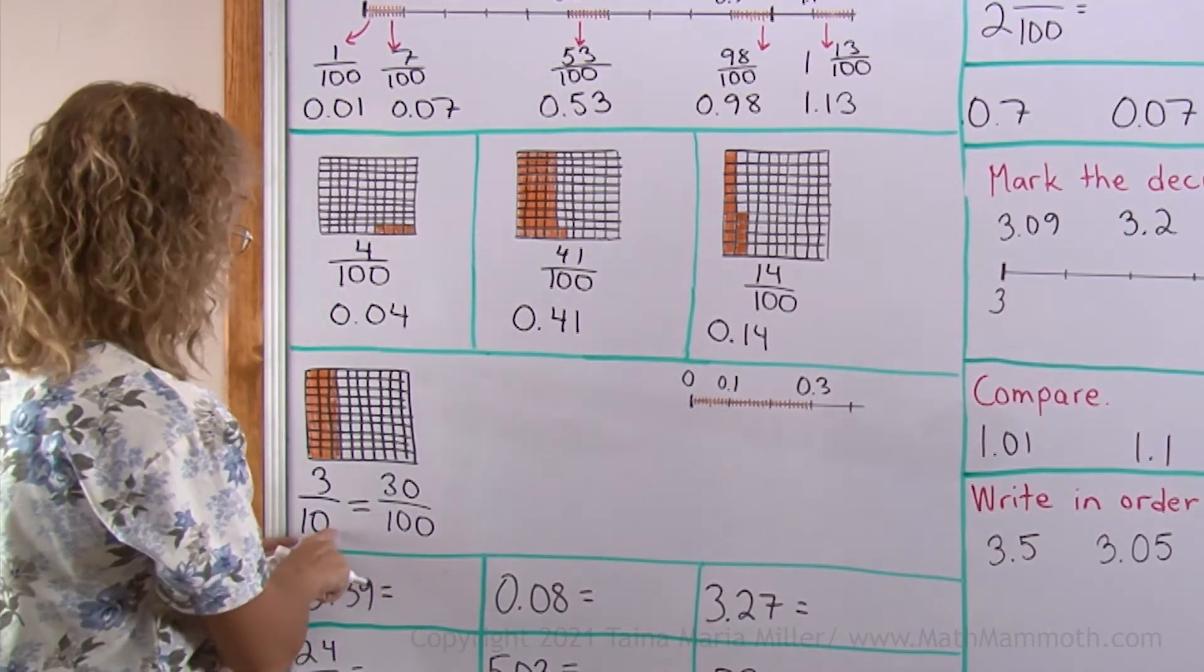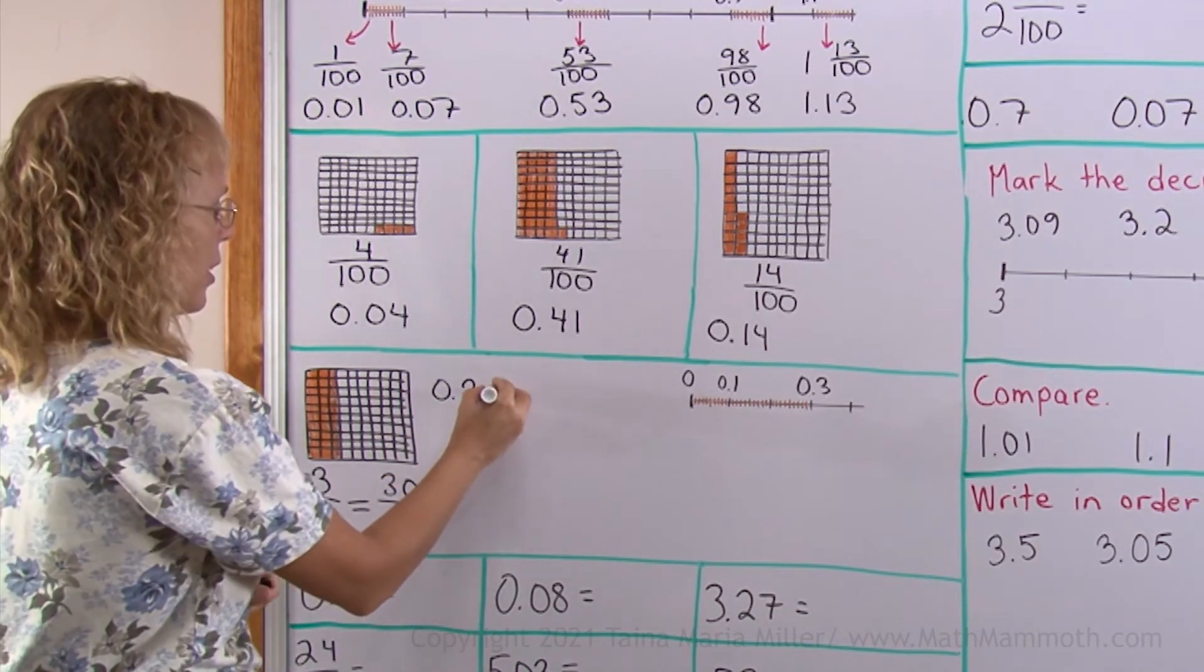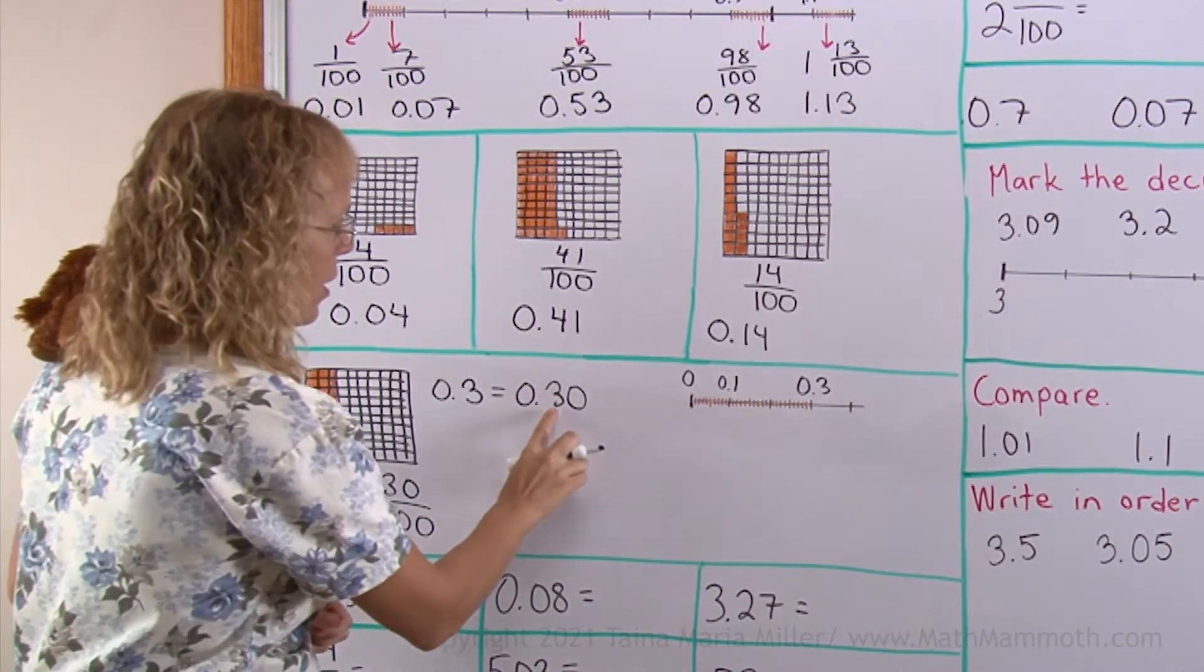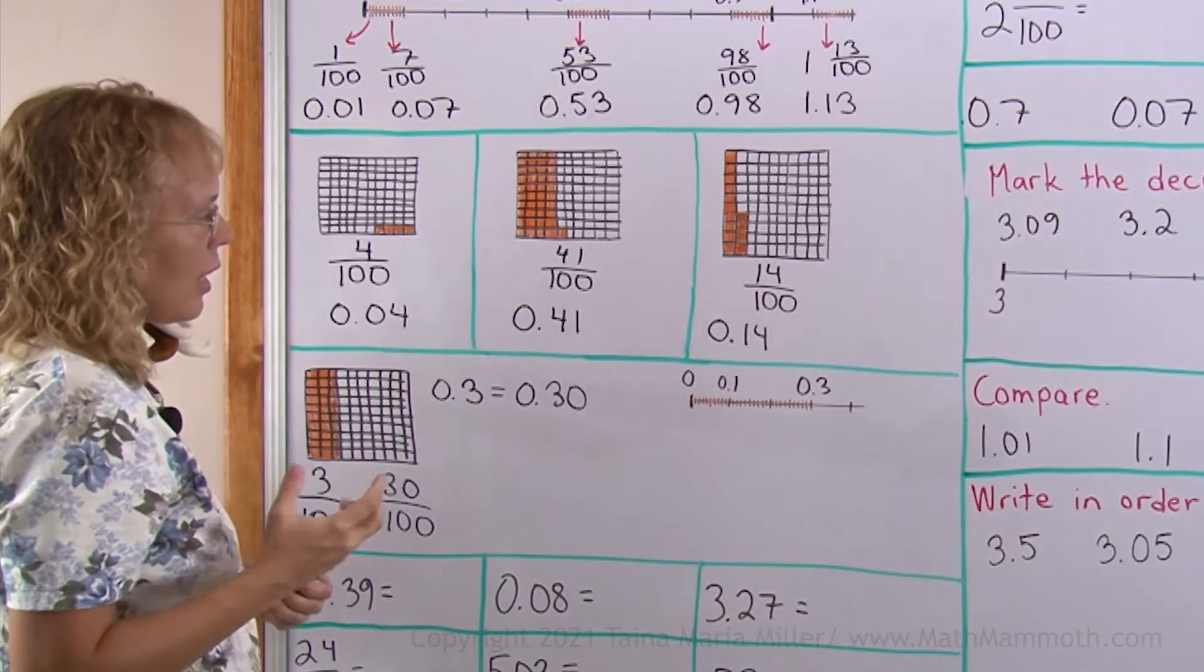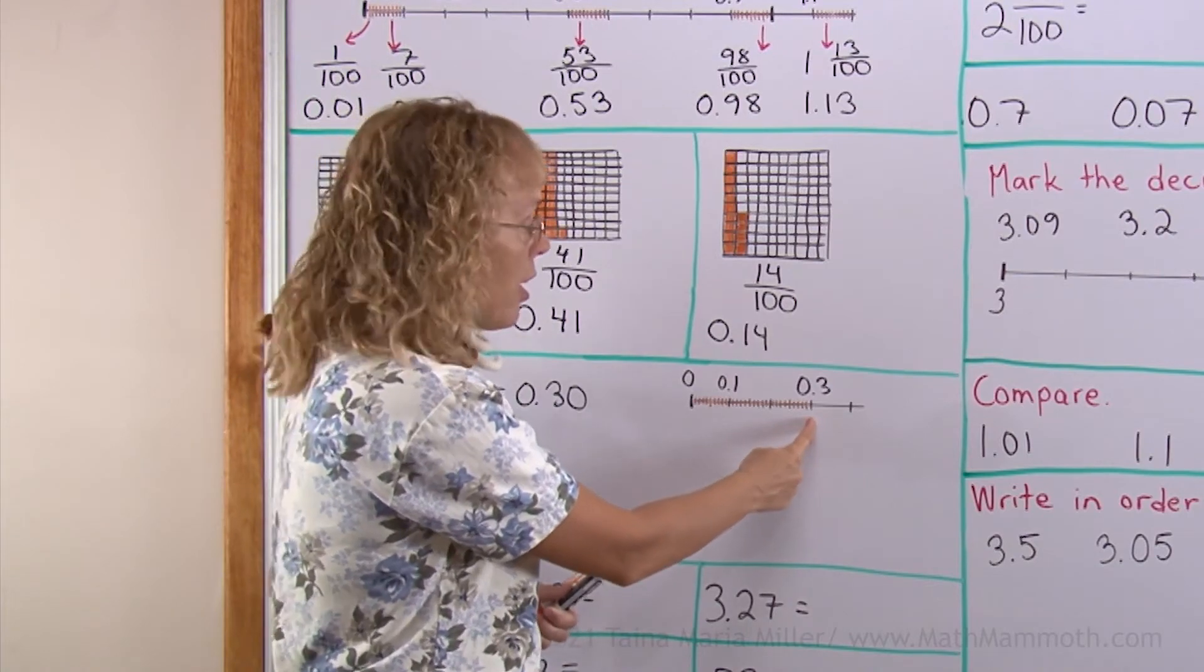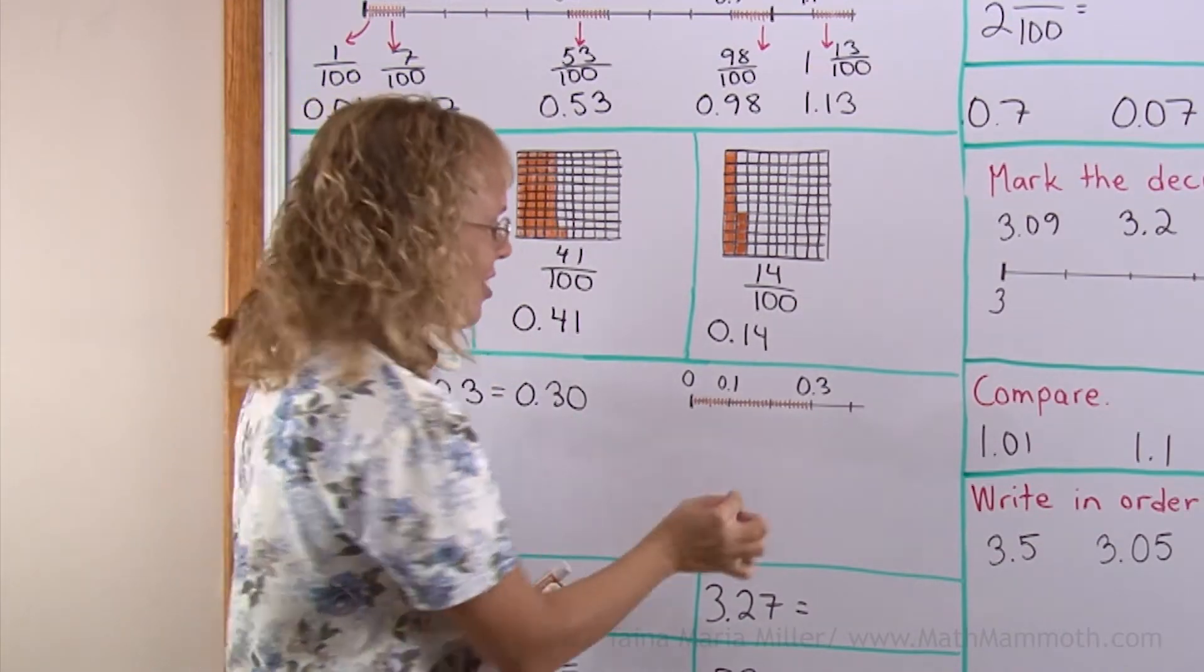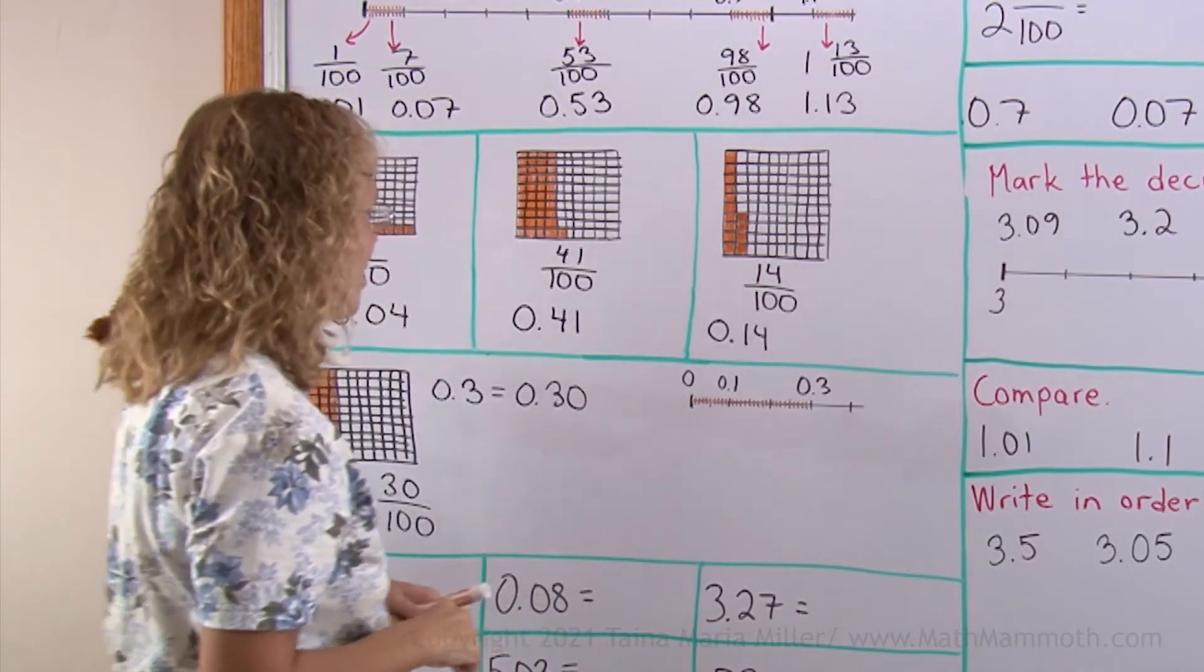As a decimal, I will write this as 0.3. 3 tenths. But it is also 30 hundredths, which I write this way. 30 hundredths. And one more time, if you consider 3 tenths, it is over here on the number line, but it is also all these hundredths. 30 hundredths. There's 10 and 10 and 10 hundredths. So it is also 30 hundredths.